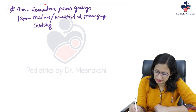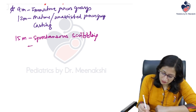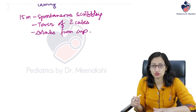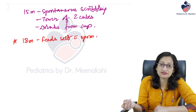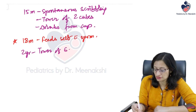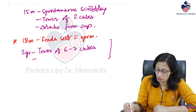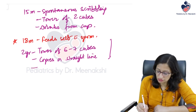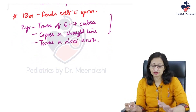At fifteen months, spontaneous scribbling, tower of two cubes, and drinks from a cup. At eighteen months, feeds self with spoon. At two years, tower of six to seven cubes, copies a straight line, learns rotating motion such as turning a doorknob or unscrewing a lid, and uses two-word sentences. A mnemonic: for two and three years, multiply the age by three to get the number of cubes in the tower.